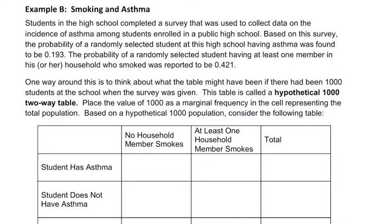In this problem, we've got a lot of information about a survey on smoking and asthma. I'm going to focus us in on this line right here: hypothetical 1,000 two-way table, because maybe you've never heard of that before. They're explaining it here.